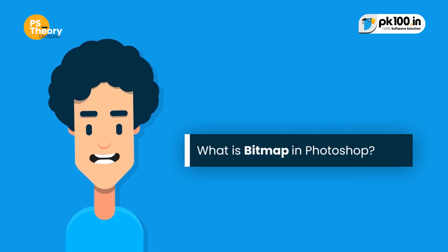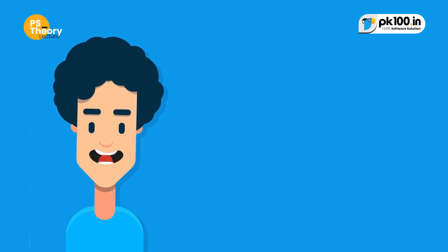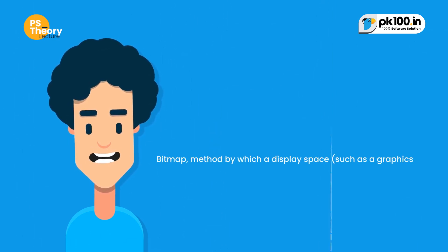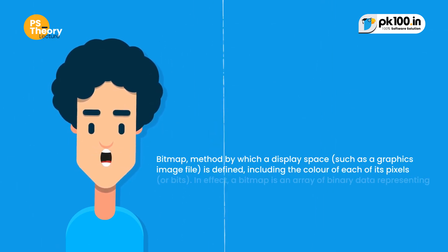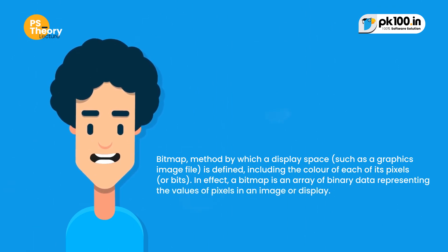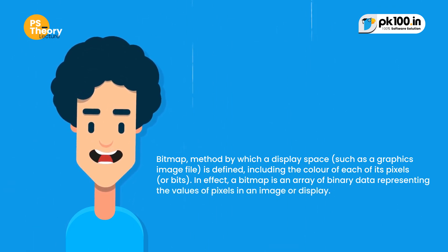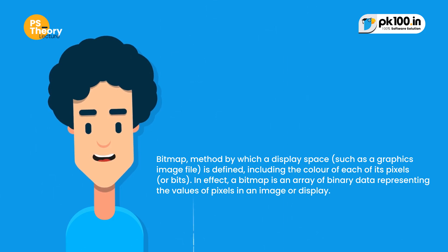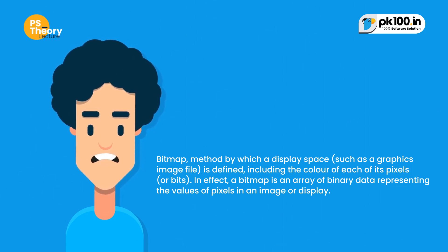Let's first understand what bitmap means. Bitmap is a method by which a display space, such as a graphics image file, is defined, including the color of each of its pixels or bits.